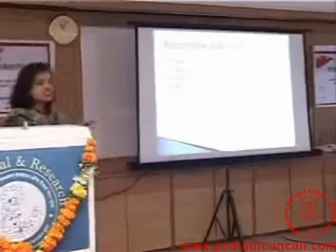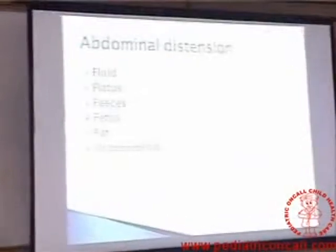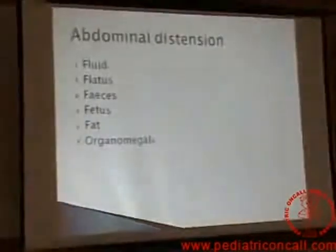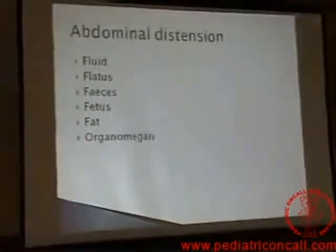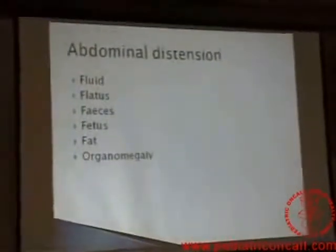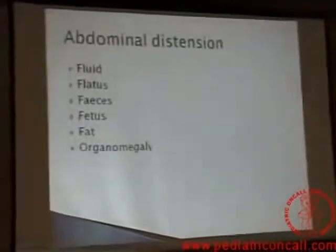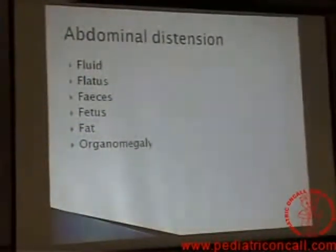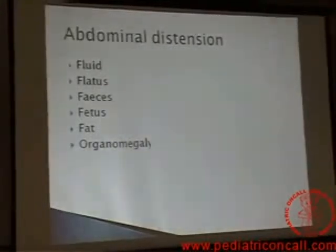Abdominal distension causes — the six F's that we learned: fluid, flatus, feces, fetus, fat, and organomegaly. Flatus is out because it can't be progressively increasing — it has to be coming and going. Feces is out — this is not constipation. He didn't tell us constipation.